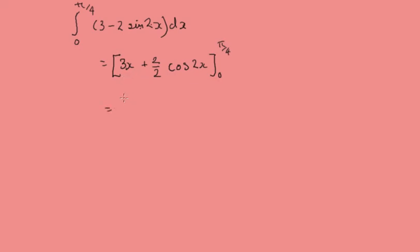Slotting all this in, we've got 3π/4 plus the cosine of, the 2 and the 4 is going to end up being π/2, minus 0 plus the cosine of 0.